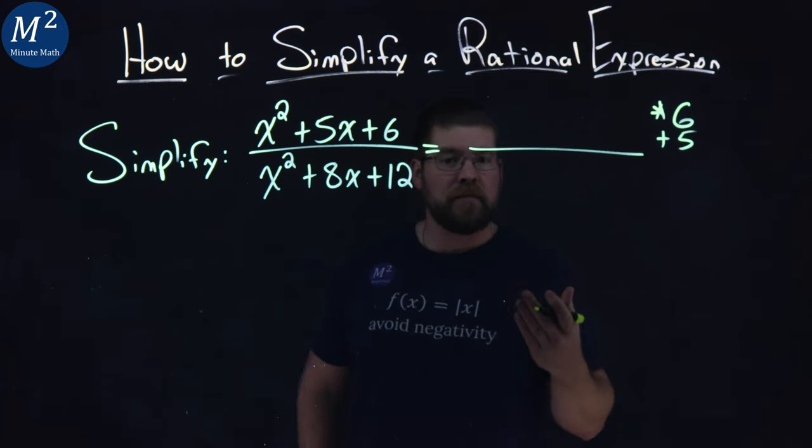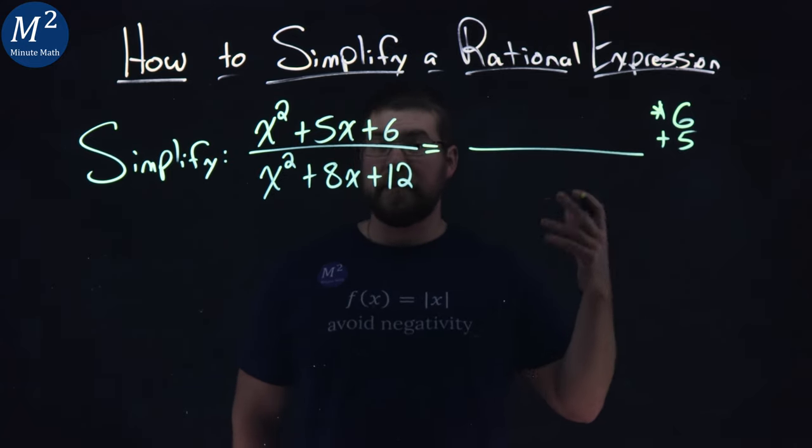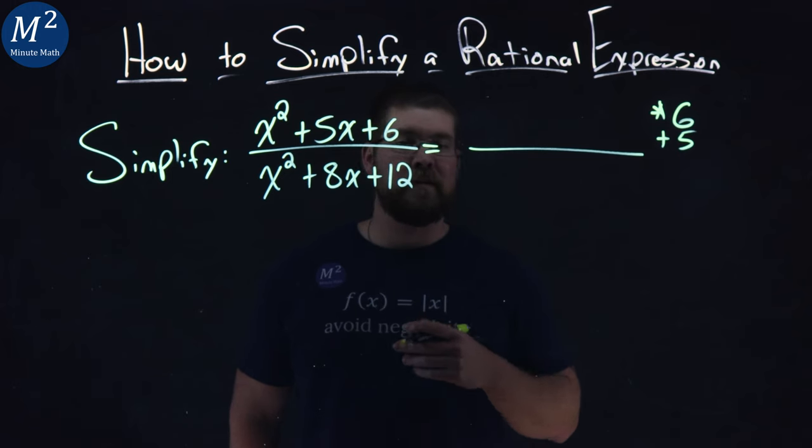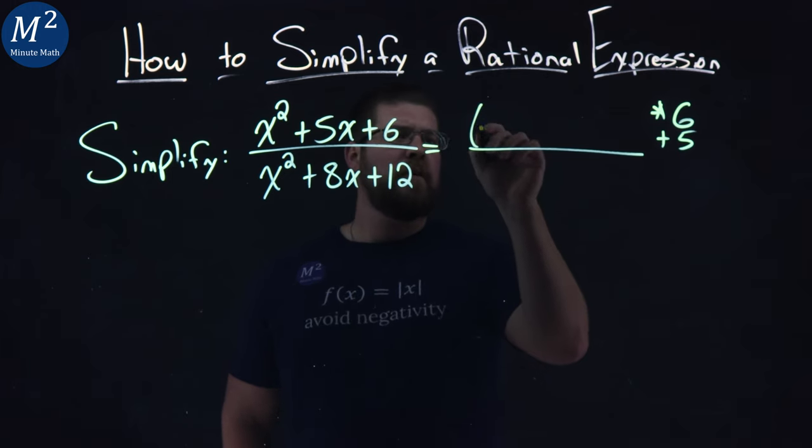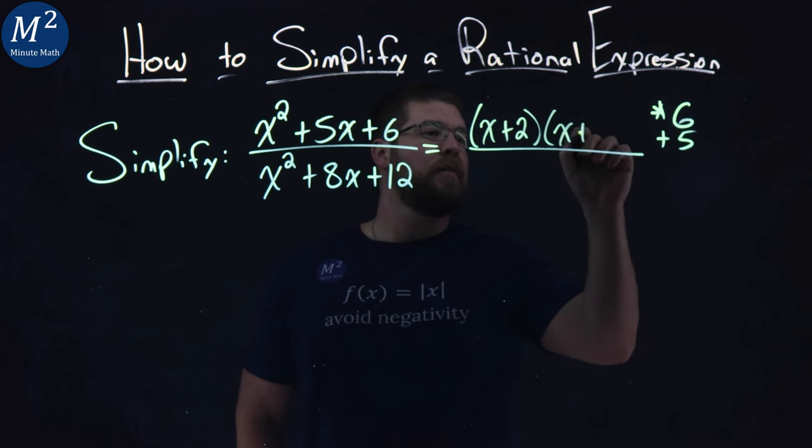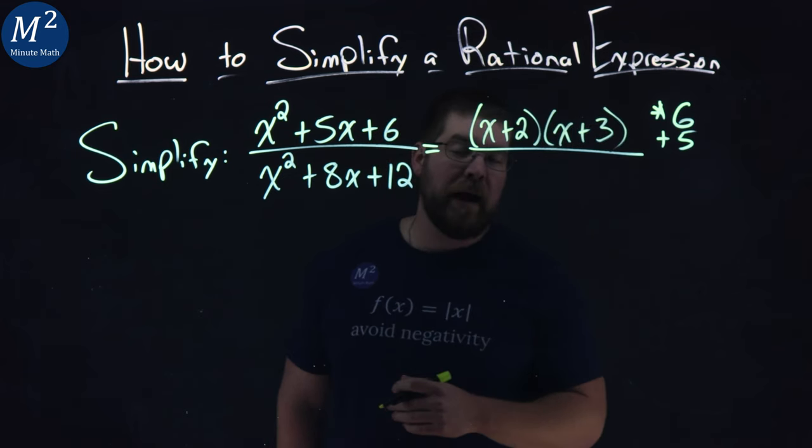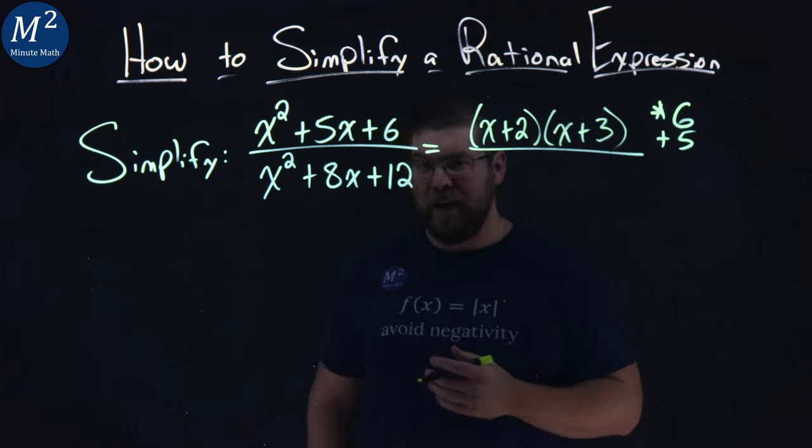So which numbers are you thinking about? Well, 2 times 3 is 6, and 2 plus 3 is 5. So we have x plus 2 here and x plus 3. If you need help with factoring, we have more videos on that on our website.